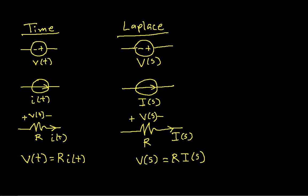Let's begin by looking at this table. We have time and Laplace — so this is the time domain and this is the Laplace domain. We have a voltage source. In the time domain, the voltage source just has a voltage V of T. In the Laplace domain, the voltage source has a voltage V of S, which is the Laplace transform of V of T.